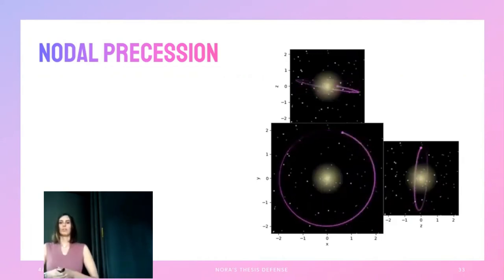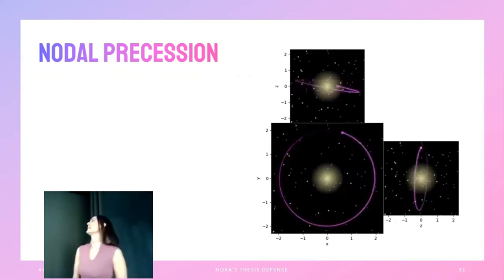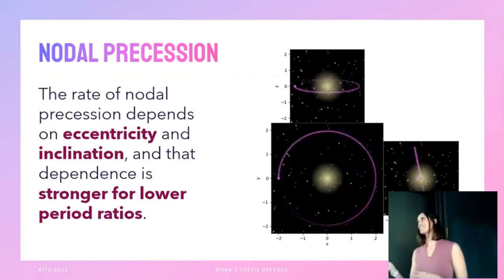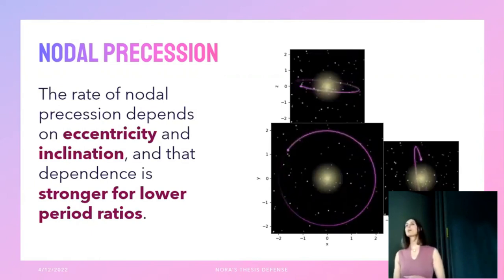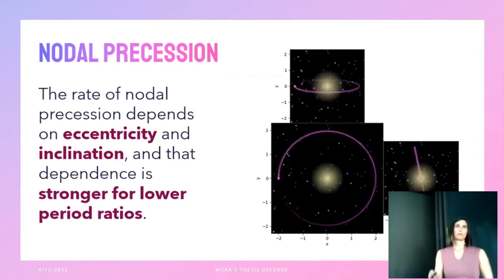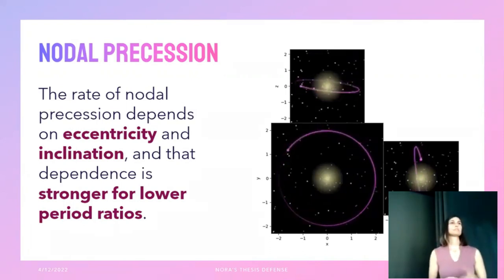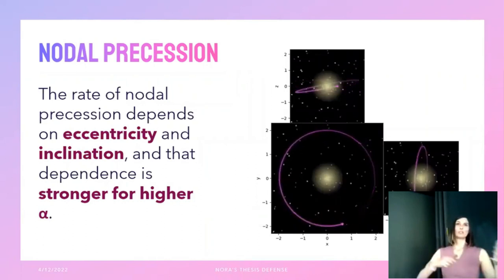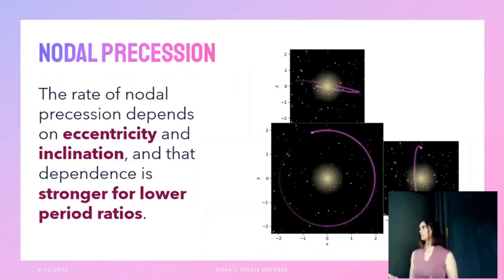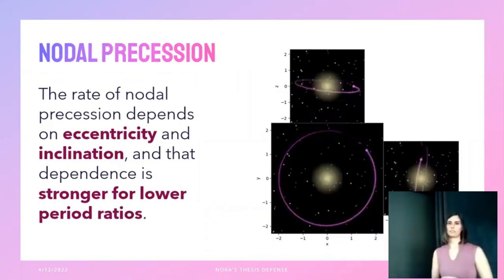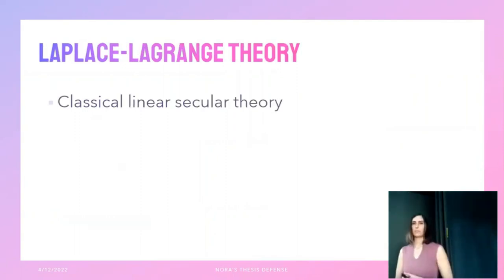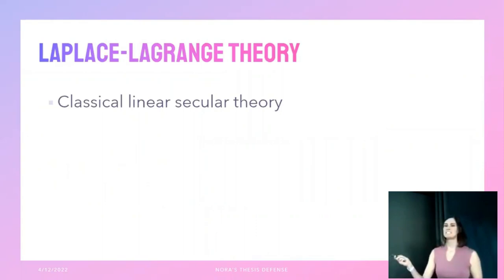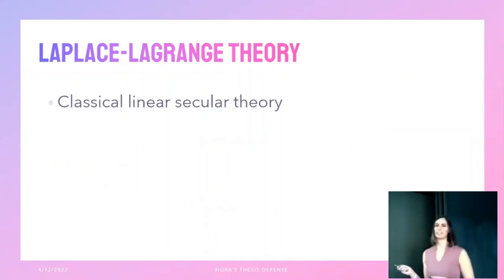How fast do orbits precess? The rate of nodal precession depends on eccentricity and inclination, and that dependence is stronger for lower period ratios — meaning planets that are very close together. The period ratio is the ratio of the two planets' periods, outer over inner, always greater than one. Equivalently, you can express this as higher alpha, where alpha is the ratio of semi-major axes, inner over outer, always less than one. Higher alpha and lower period ratio both just mean planets close together.